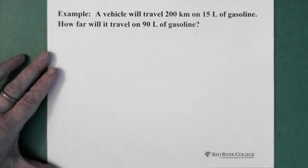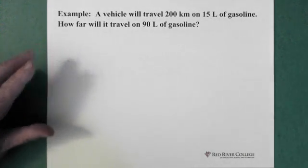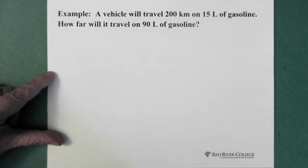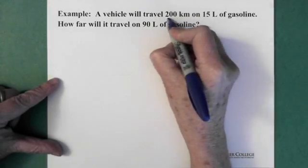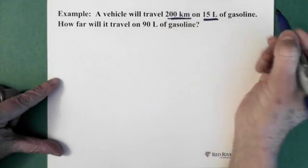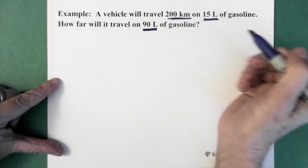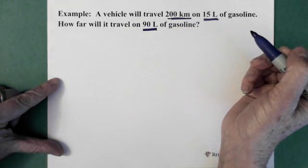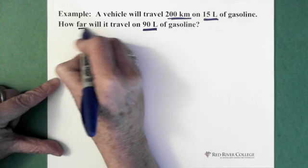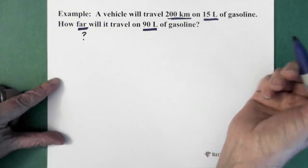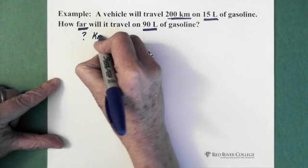So let's look at this question. A vehicle will travel 200 kilometers on 15 liters of gasoline. How far will it travel on 90 liters of gasoline? So here we know we have 200 kilometers for 15 liters. We're wanting to know what happens if we have 90 liters of gasoline and we're trying to find the distance. So this is our question mark. What's the distance? How many kilometers would we travel?